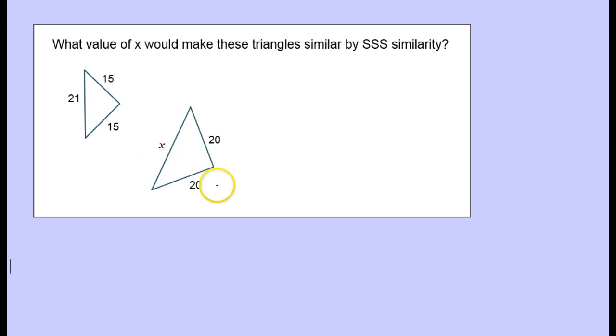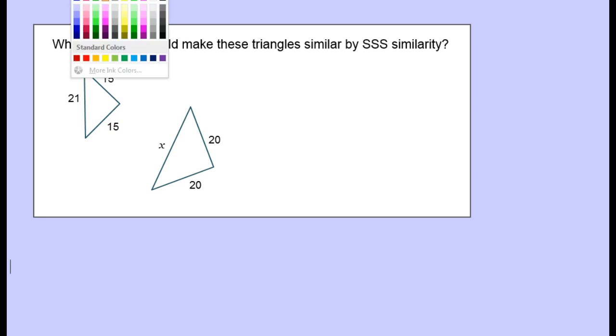We need to decide what sides are corresponding sides so we can make ratios that would be equal. And we are aided by the fact that this is an isosceles triangle, 15 and 15.